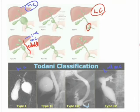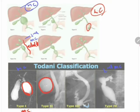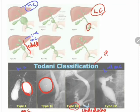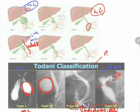Looking at radiological images: type 1 shows saccular or fusiform dilatation of the CBD. Type 2 shows a lateral diverticulum, which can be clearly identified on imaging. Type 3, choledochocele, is the intraduodenal part of the bile duct getting dilated. Type 4A shows dilatation of both the intrahepatic and extrahepatic ducts.